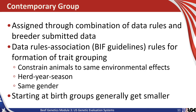Contemporary groups are assigned through a combination of data rules and breeder-submitted management information. The data rules at the association level typically follow a set of Beef Improvement Federation guidelines. Those guidelines constrain animals to the same environmental effects. A simple way to think about contemporary group is animals born in the same year, in the same herd, in the same season of production, and typically of the same gender. Starting at birth groups, they're usually the largest. As we progress through changes in management and production, contemporary groups tend to get smaller over time as they become more fragmented based on differential performance or measurement dates.